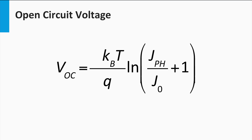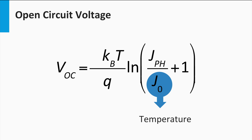The equation shows that the open circuit voltage depends on several parameters. First, if the photocurrent density is increased, the open circuit voltage is increased as well. This means that by increasing the irradiance — or in other words, by shining more light on the solar cell — the open circuit voltage can be increased. Secondly, the open circuit voltage depends on the temperature. Although the equation at first glance suggests that the open circuit voltage increases with temperature, this is not the case. The leakage current J0 of the diode strongly depends on temperature: the higher the temperature, the larger the leakage current and the smaller the open circuit voltage will be.